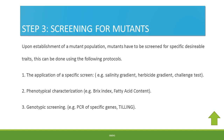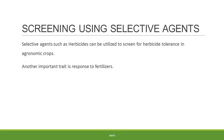Genotypic screening involves PCR of specific genes followed by cleavage, or targeted sequencing of specific genes associated with specific traits. Screening using selective agents is one of the most important screens used for herbicide screening. Another important aspect is response to fertilizers, as not all mutants may respond to nitrogenous fertilizers.